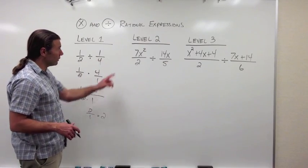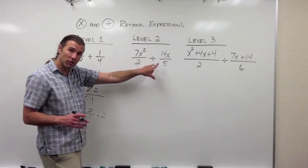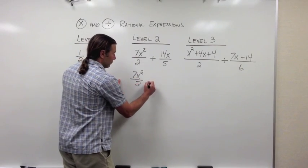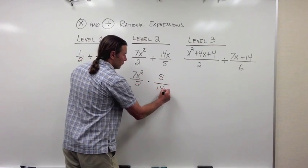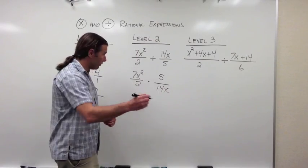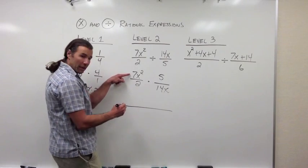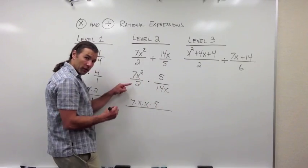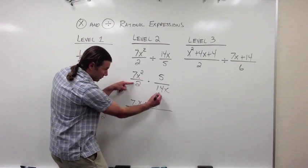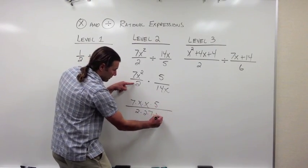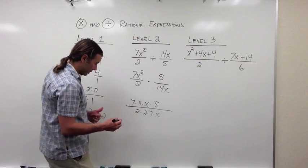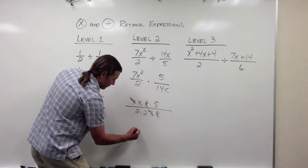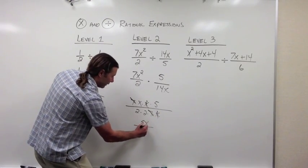Now let's look at the division problem at level 2. We change this division to a multiplication problem — the first fraction stays the same, and we multiply by 5 over 14x. Once it's multiplication, we factor it all out. Across the top: 7 times x times x times 5. Across the denominators: 2 times (2 times 7) times x. Now dividing out the common factor of 7 and the common factor of x, we get 5x over 4.